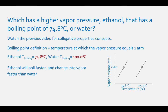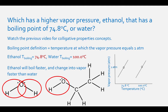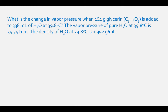This makes sense because ethanol will boil faster and will change into more vapor at a higher rate than water. This is because ethanol has lower intermolecular forces than water, as water has two spots for hydrogen bonding and ethanol only has one.